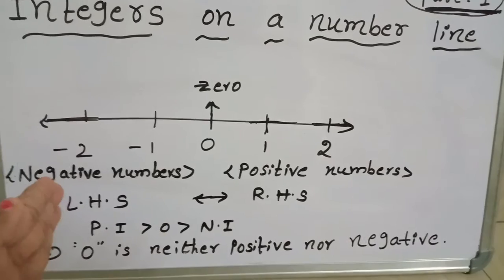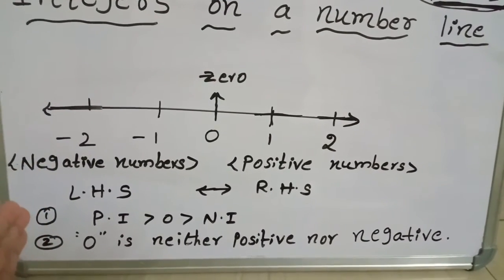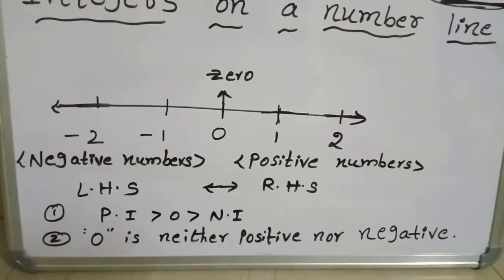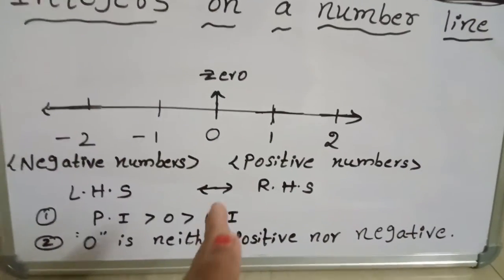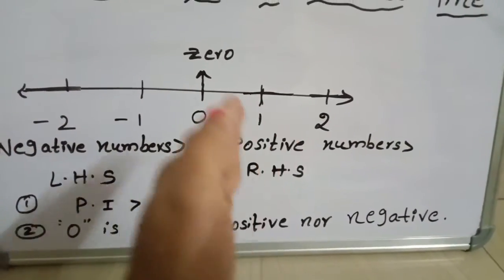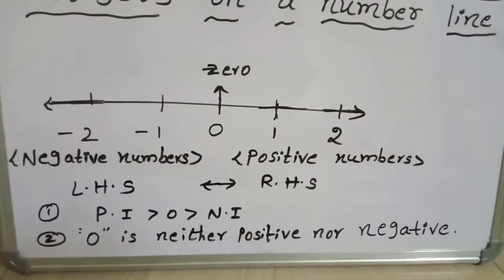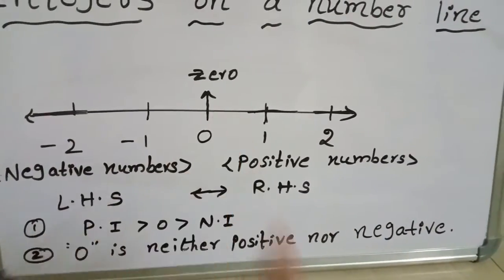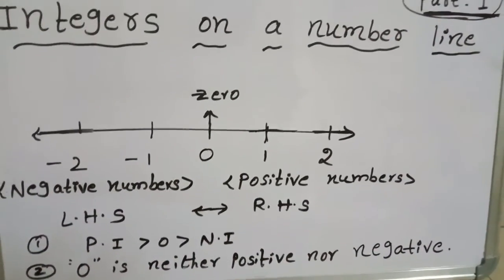numbers and greater than the negative numbers. Here negative numbers are always smaller than zero and positive numbers. If you move right side of zero, the number will be going to increase. If you move left side of zero, the number will be going to decrease. Here zero is neither positive nor negative.